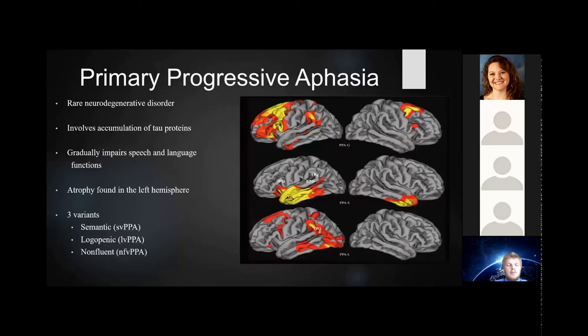Primary progressive aphasia is a neurodegenerative disorder that affects the left hemisphere. Research currently indicates that tau proteins may be a potential cause of this disorder, and currently there are three variants of PPA described.